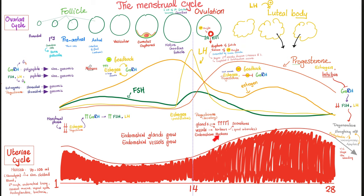Why is the endometrium growing more in the second half of the cycle? That's the effect of progesterone — it's responsible for the secretory phase: tons of glands, tons of secretions, tortuous vessels, spiral arterioles, and thick, fluffy, engorged endometrium. It is pro-gestation. Progesterone prepares the uterus for implantation of the embryo. The first half of the cycle is the land of estrogen; the second half is the land of progesterone mainly, and some estrogen.